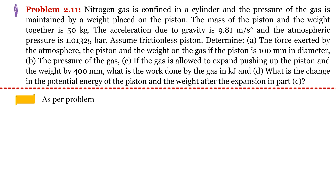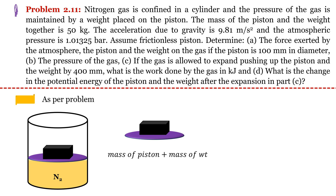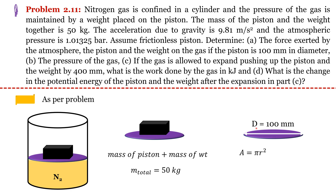As per the problem, the pressure of the gas is maintained by a piston and a weight placed on the piston. The mass of piston plus weight equals 50 kg. The dimension of the piston is also given, so we can find the area of the piston: area = π r². The diameter is given, so we convert it to radius — 50 mm — then convert to meters to estimate the area in square meters.